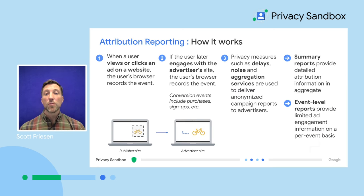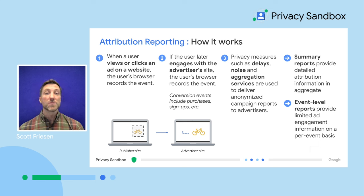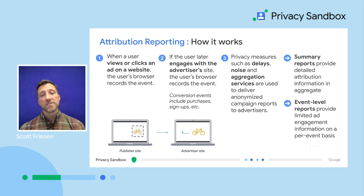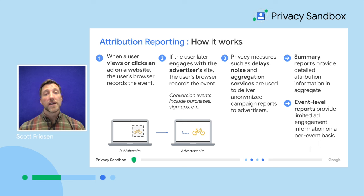Lastly, the Attribution Reporting API gives access to two types of insights. Event-level reports provide transaction-level information, such as when a specific ad click or view likely resulted in a conversion. Summary reports deliver richer, more detailed conversion data, such as purchase value or ROI, over groups of people. When a user sees or engages with an ad on a publisher's site, the browser registers that event. When that user later converts on the advertiser's site, the browser matches the conversion event to the initial ad, credits it, and schedules a measurement report. Privacy measures such as delays, noise, and aggregation are applied to deliver an anonymized report to the advertiser.